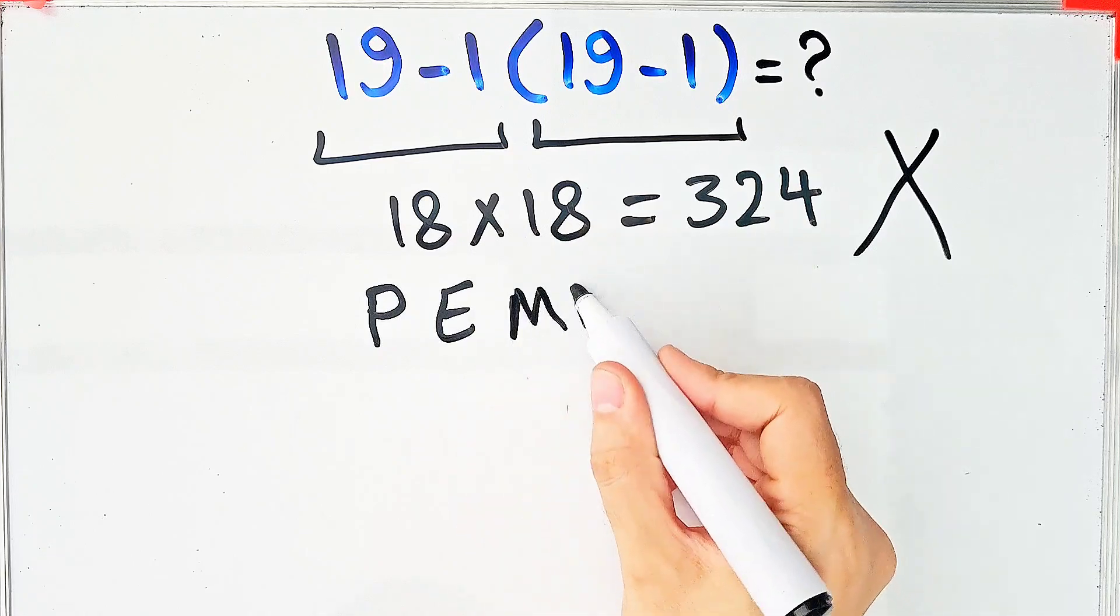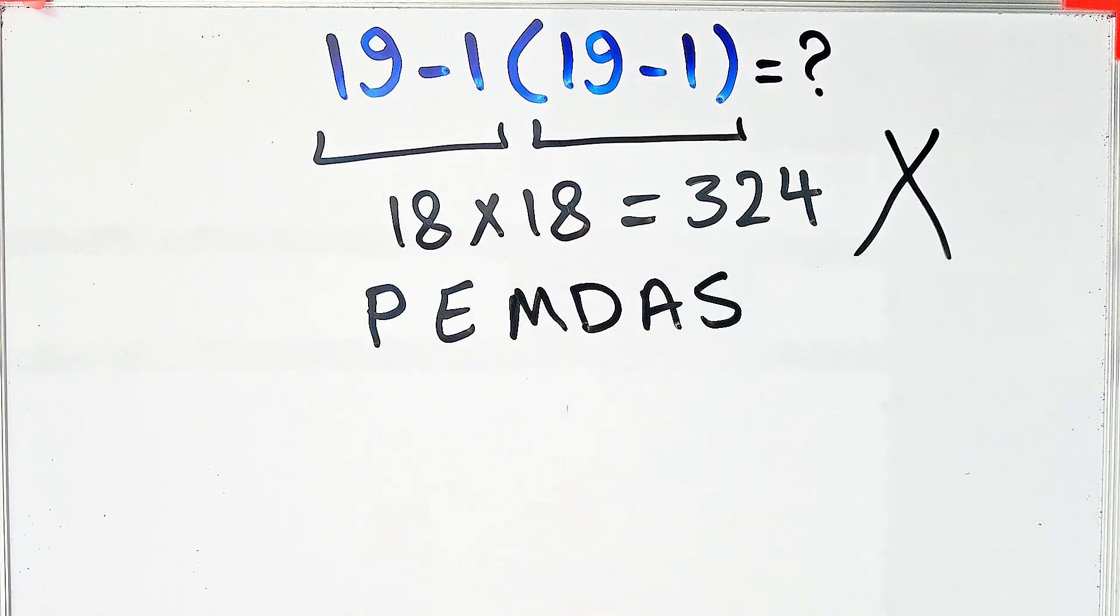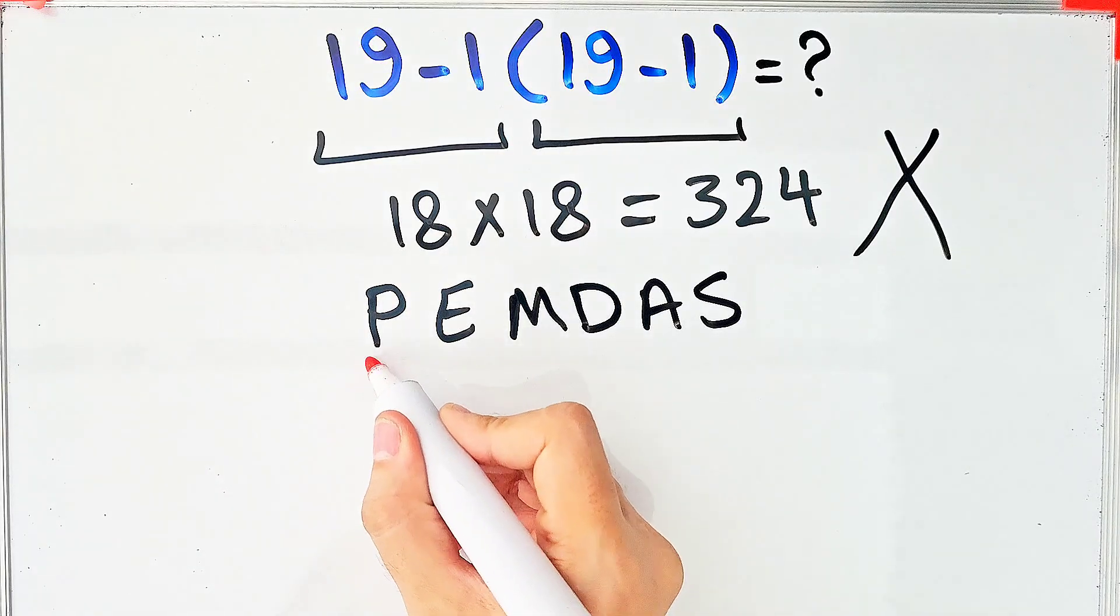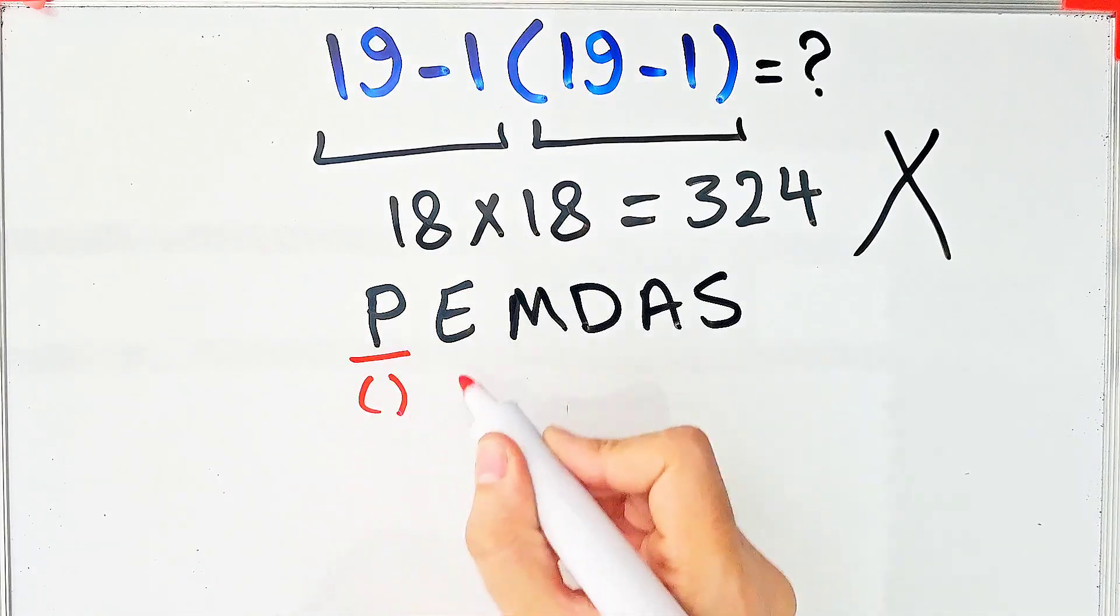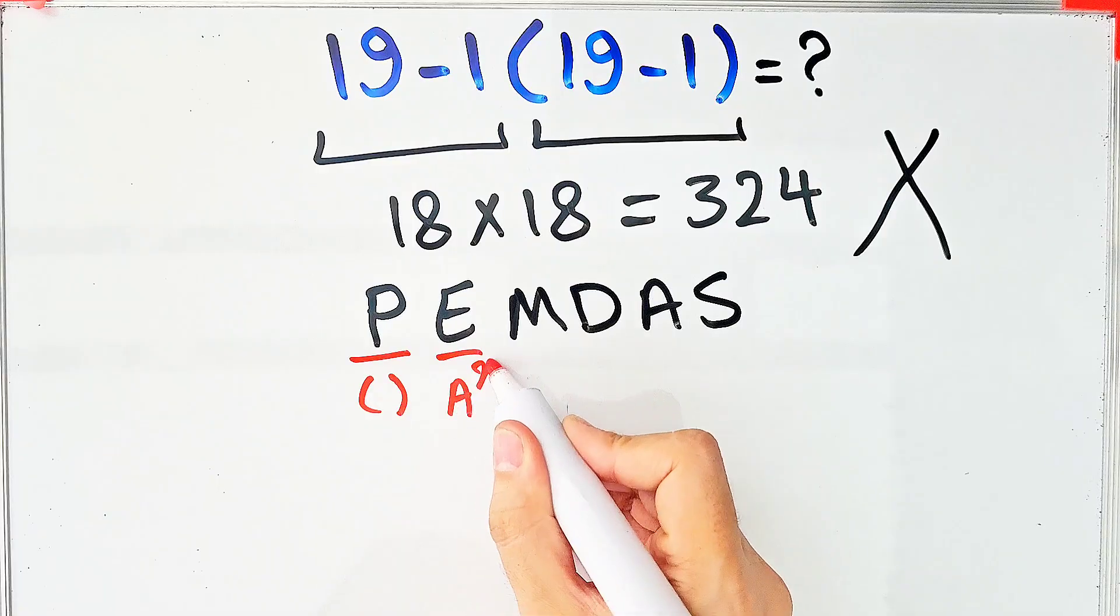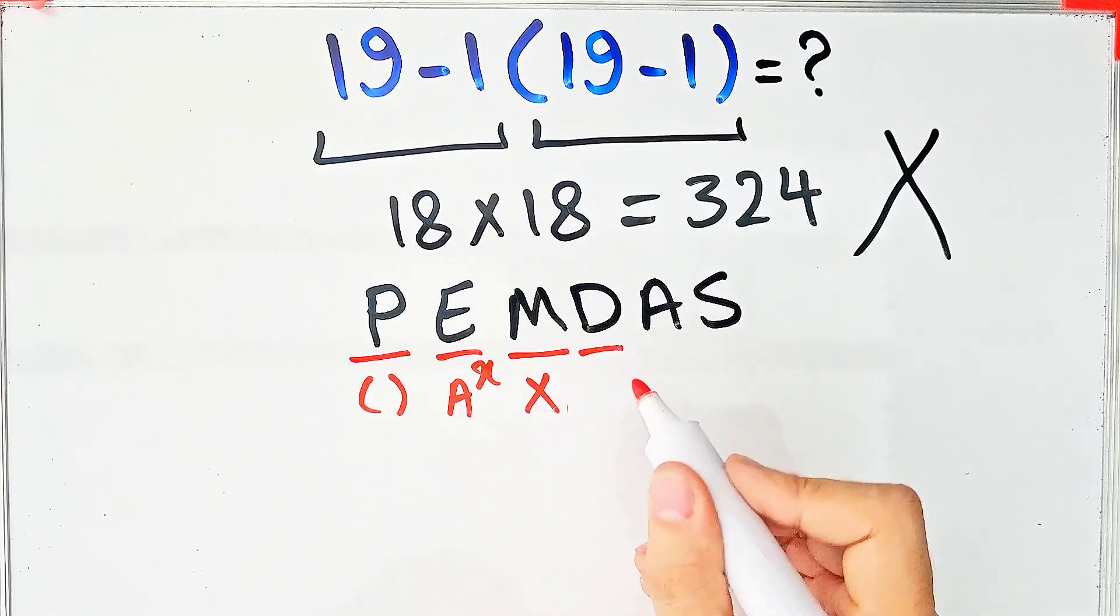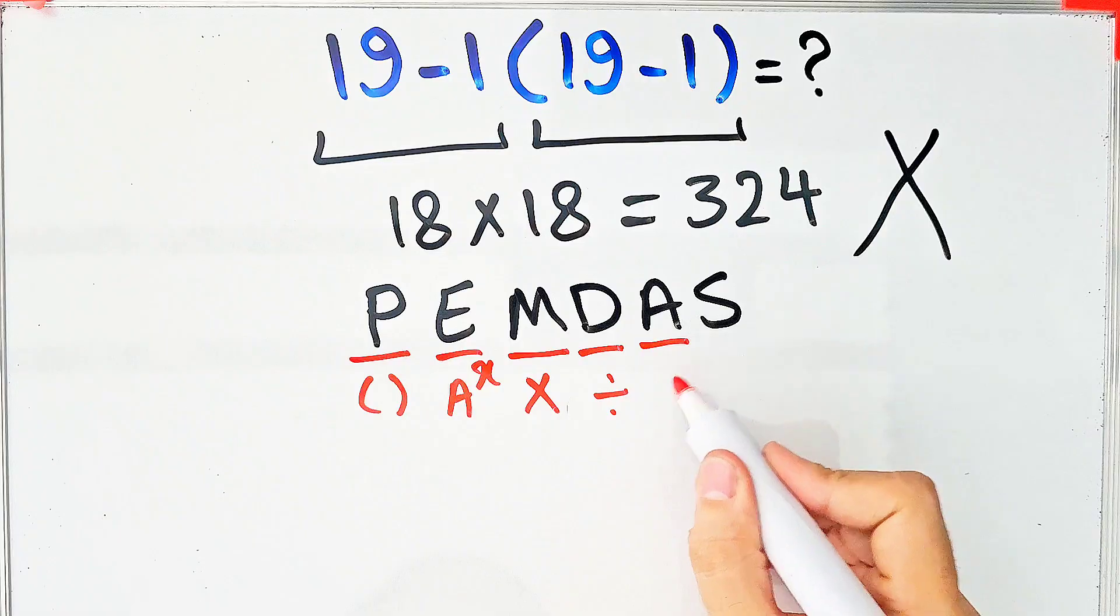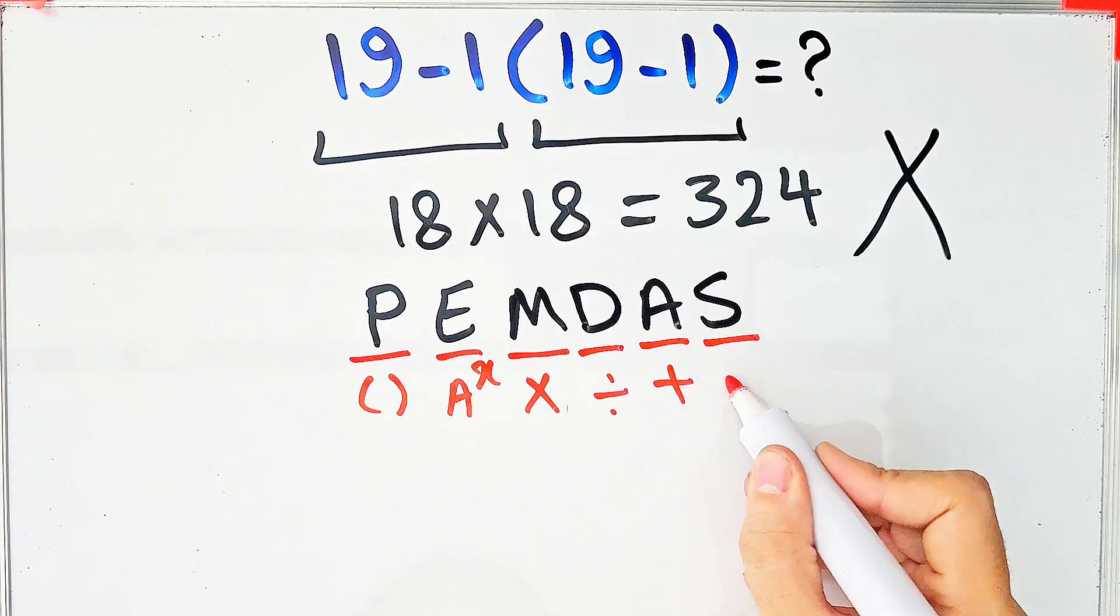PEMDAS shows the priority of the mathematical operations. In this rule, P stands for parentheses, E stands for exponent, M stands for multiplication, D stands for division, A stands for addition, and S stands for subtraction.